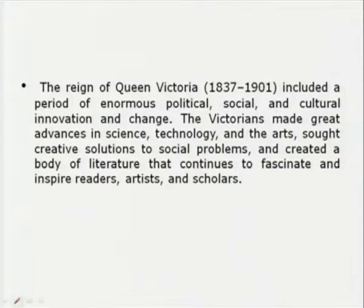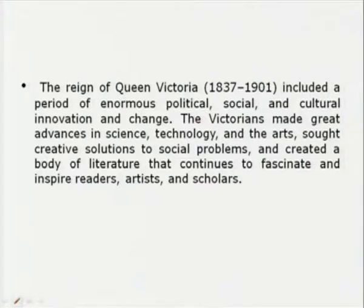The reign of Queen Victoria from 1837 to 1901 included a period of enormous political, social, and cultural innovation in science. The Victorians made great advances in science, arts, and technology, creating solutions to social problems and a body of literature that continues to fascinate and inspire readers, artists, and scholars. This was also the growth of British imperialism, where they explored boundaries — coming to India, Africa, New Zealand — and as if the sun never set on the British empire.